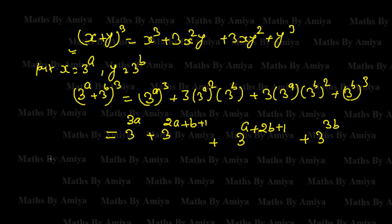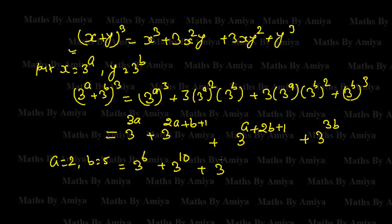To understand it better, let's put a = 2 and b = 5. In this expression we will get: 3^6 + 3^10 + 3^13 + 3^15. If we put a = 2 and b = 5 we will get this expression.